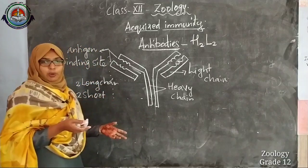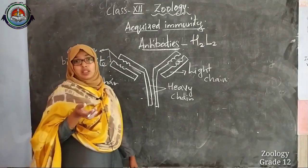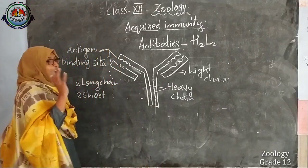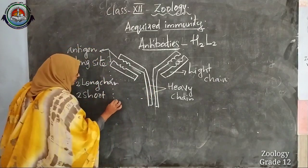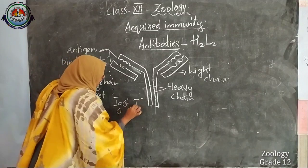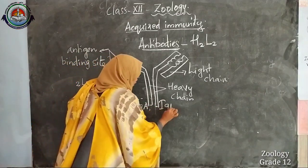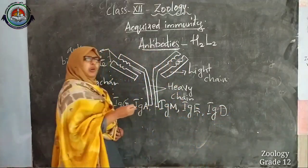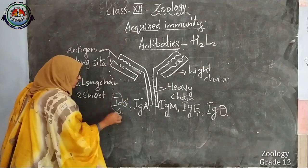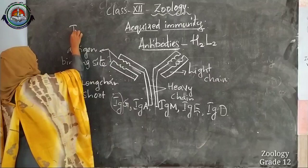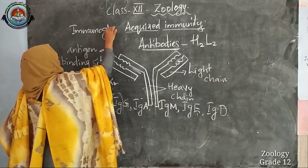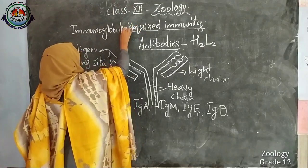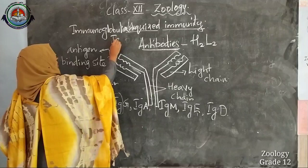Different types of antibodies are produced in response to different antigens entering the body. There are five types of antibodies: IgG, IgA, IgM, IgE, and IgD. Ig stands for immunoglobulin. Immunoglobulin is represented as Ig. Immunoglobulins are molecules produced in the plasma cells.